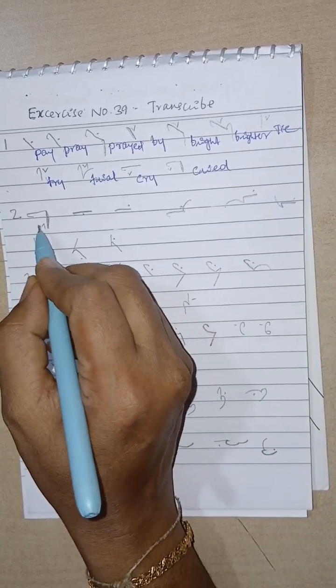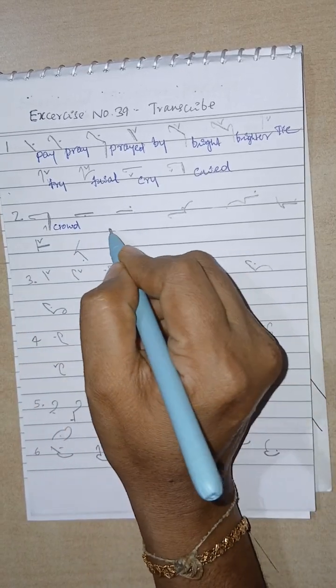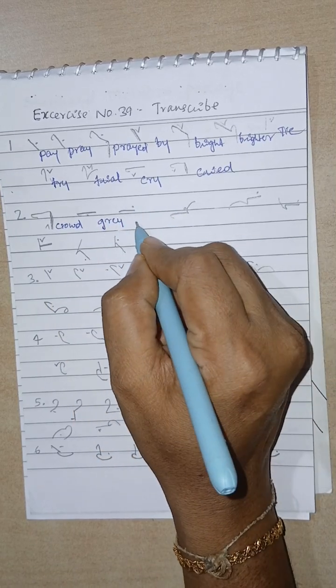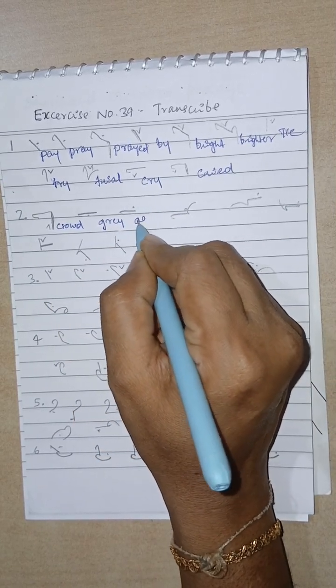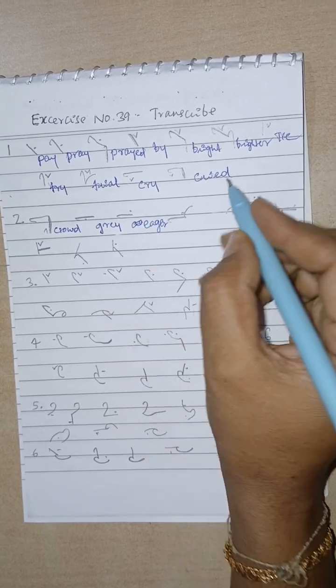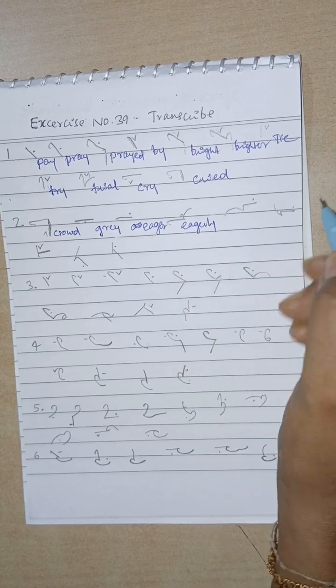Next crowd. Ker, D, O diphthong. Gray, Ger, A oval, Agree. Sorry, this is E, Ger. Ger, E oval, E, Ger, Lee. Ger and L.